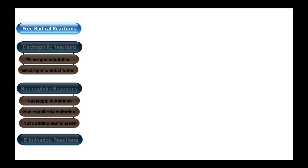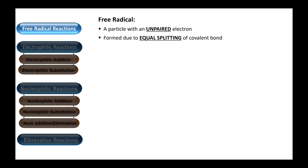Now let's have a look at all these reactions one by one. We start with free radical reactions. Before we start, we should be clear about what free radicals are. A free radical is a particle with an unpaired electron, formed due to equal splitting of a covalent bond. For example, a chlorine molecule is formed between two chlorine atoms sharing a pair of electrons. When split by UV light, each chlorine atom takes its own electron.